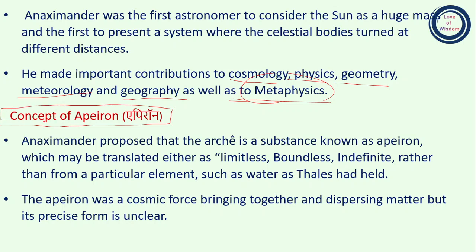The most important concept in Anaximander's philosophy is the concept of Apeiron. Anaximander proposed that the arche — the primary substance — is known as Apeiron, which may be translated as limitless, boundless, or indefinite, rather than from a particular element such as water as Thales had proposed. As seen in the Thales video, according to Thales, water is the primary source of the universe — the primary element or substratum of the world; everything is made of water.